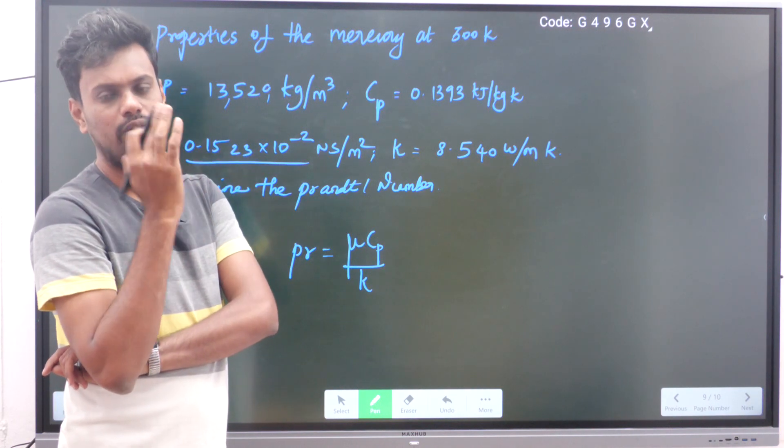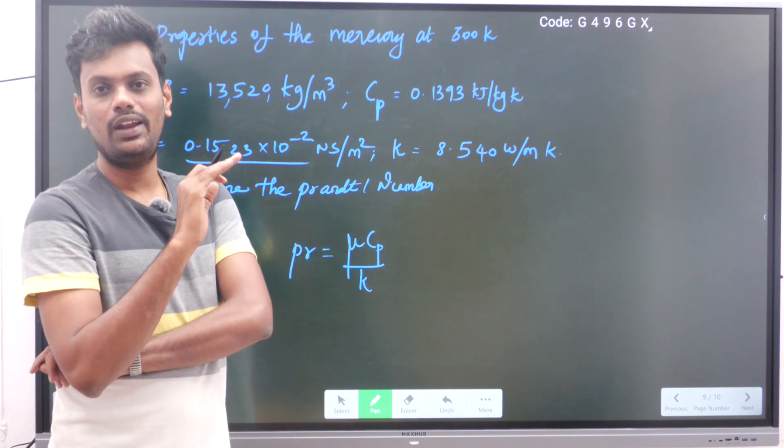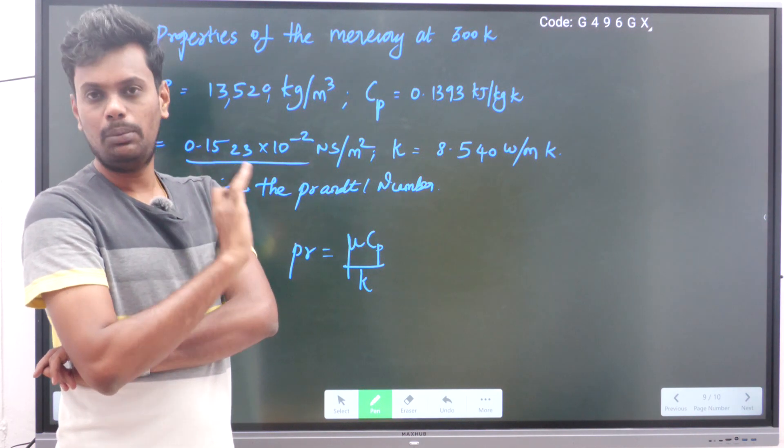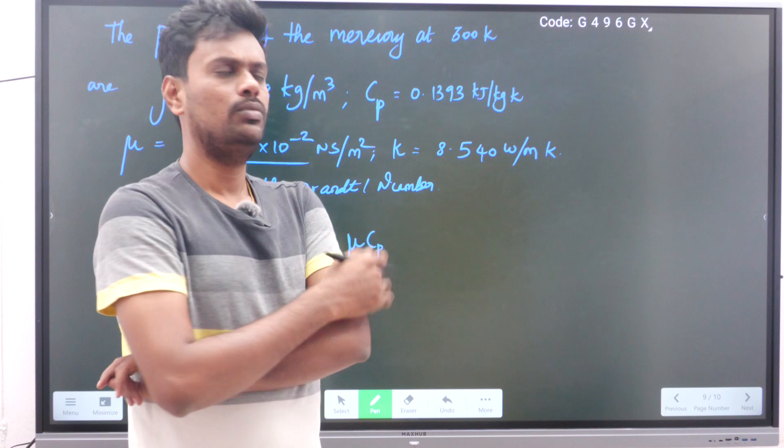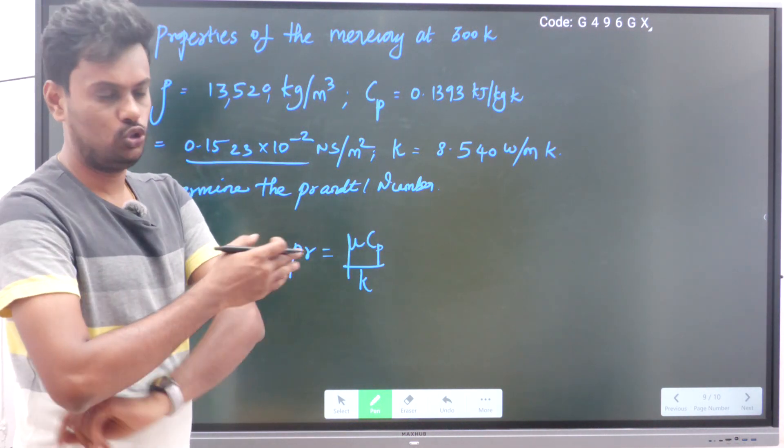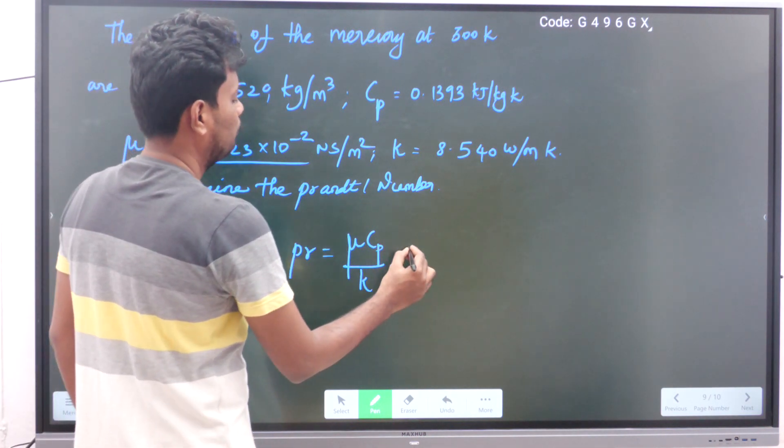Just to confuse you they are giving those values. You do not consider those values. What are the things needed to find out the Prandtl number, that only you take from the given data. The mu value is given as 0.1523 × 10⁻², so substitute 0.1523 × 10⁻².